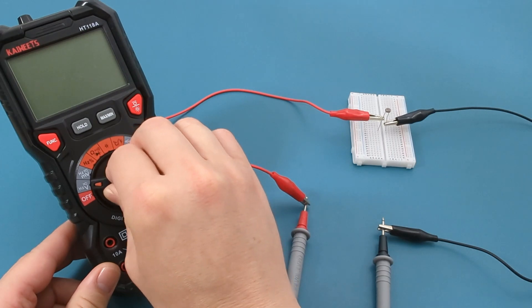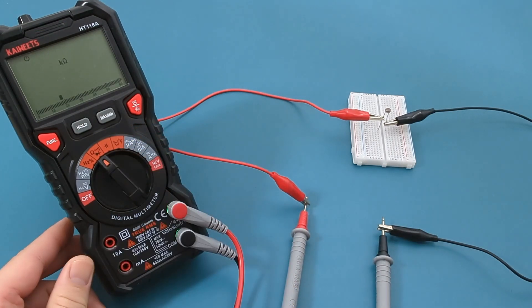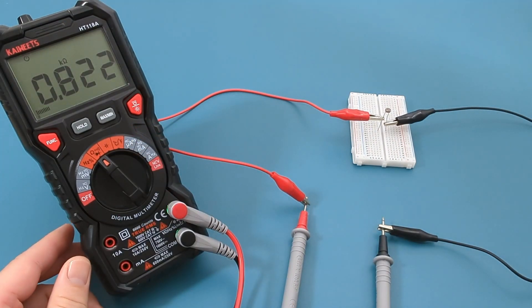Turn on your multimeter and set it to the resistance mode. This is usually indicated by the omega symbol.